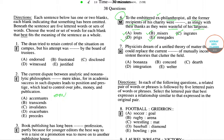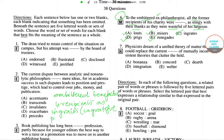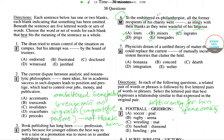The embittered ex-philanthropist thinks of the receivers as ingrates. What are ingrates? Ingrates are nothing but ungrateful persons. This is happening because they do not thank him sufficiently for all the work he has done — for all his generosity. He does not think of them as misers, which are holders of wealth.